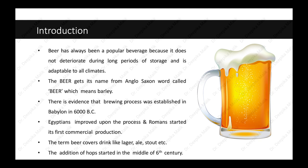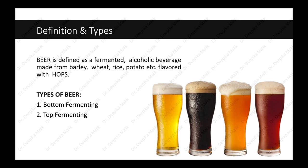Egyptians improved upon the process and Romans started its first commercial production. The term beer covers drinks like lager, ale, stout, etc. The addition of hops started in the middle of the sixth century. Hops are the flavoring as well as preservative ingredients added to beer. Beer is defined as a fermented alcoholic beverage made from barley, wheat, rice, potato, etc., flavored with hops.